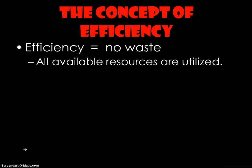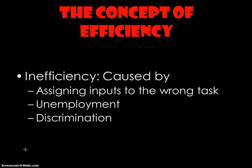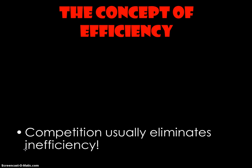The concept of efficiency means we're not wasting any of our resources — we're using all resources available to us — meaning we're producing somewhere on the curve. Inefficiency is caused by assigning inputs to the wrong task, using the wrong tools for the wrong jobs, or putting the wrong workers in the wrong positions. Unemployment means all our workforce is not placed in a job, so the nation is producing inside its production possibility frontier. Discrimination can also cause inefficiency in the workplace.